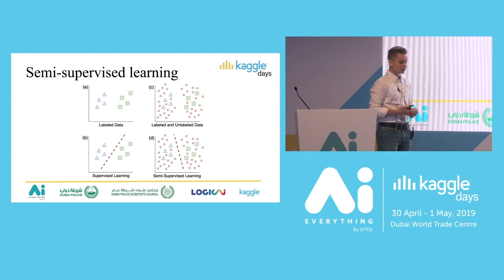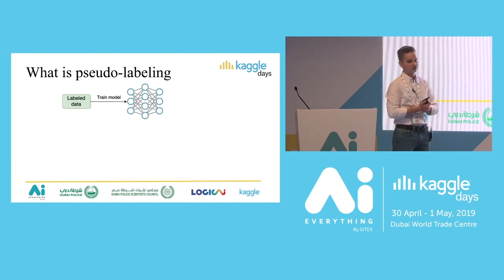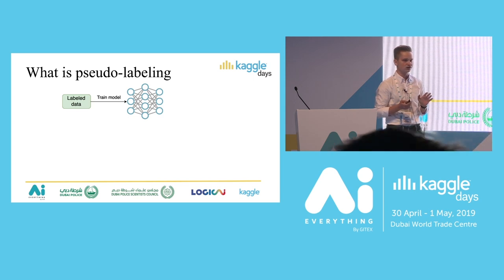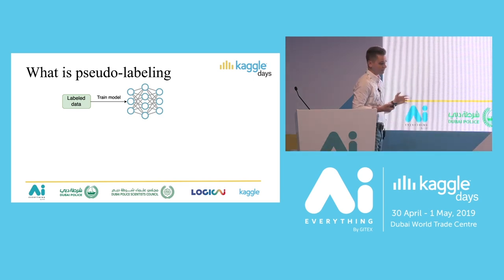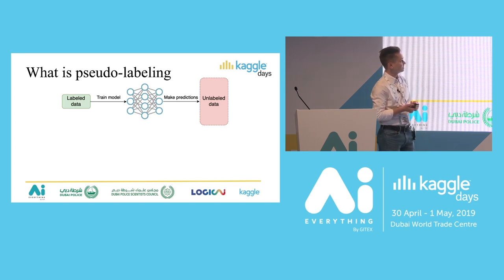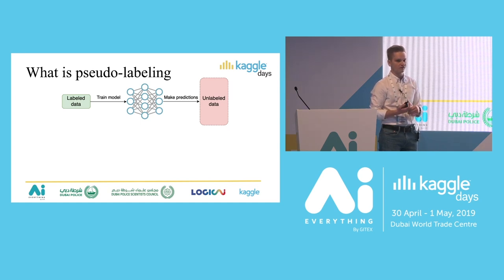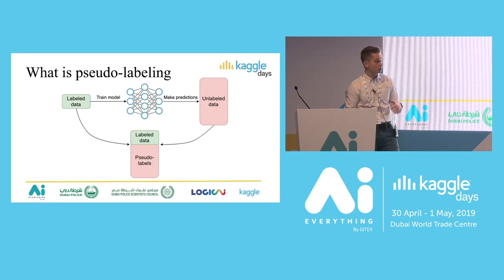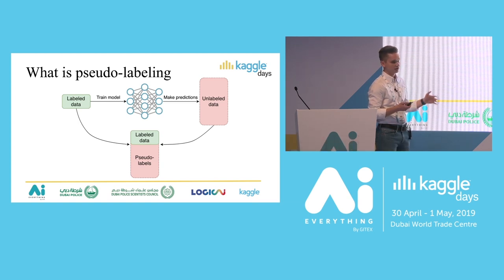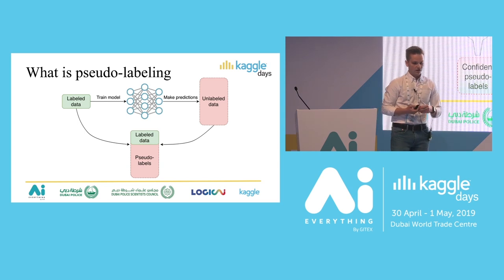What is pseudo labeling? It's the simplest form of semi-supervised learning. Semi-supervised learning has many different approaches, but pseudo labeling is the most efficient and the easiest to use. The idea is straightforward: we have labeled data, we train a supervised model on this labeled data, and then we make predictions on the unlabeled data. These predictions are the pseudo labels. We treat all predicted test observations as pseudo labels, concatenate them with the original labeled data, and use this extended labeled dataset for subsequent training.